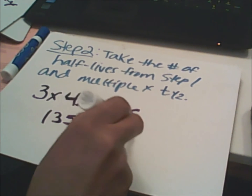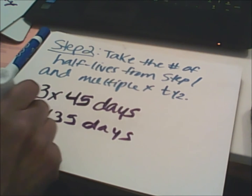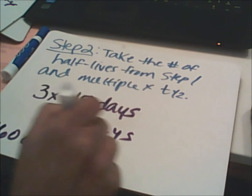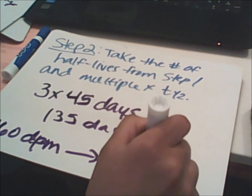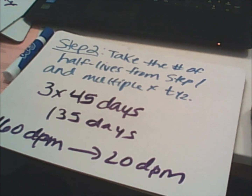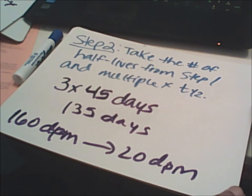So to go from 160 DPMs to 20 DPMs it's going to take 135 days. I have another problem for you.